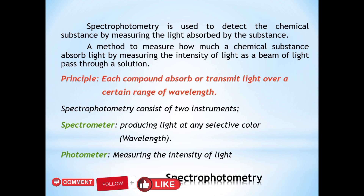The single principle used in a spectrophotometer is that each compound absorbs or transmits light over a certain range of wavelengths. Basically, the spectrophotometer consists of two instruments: a spectrometer which produces light at any selective color or wavelength, and a photometer measuring the intensity of light.